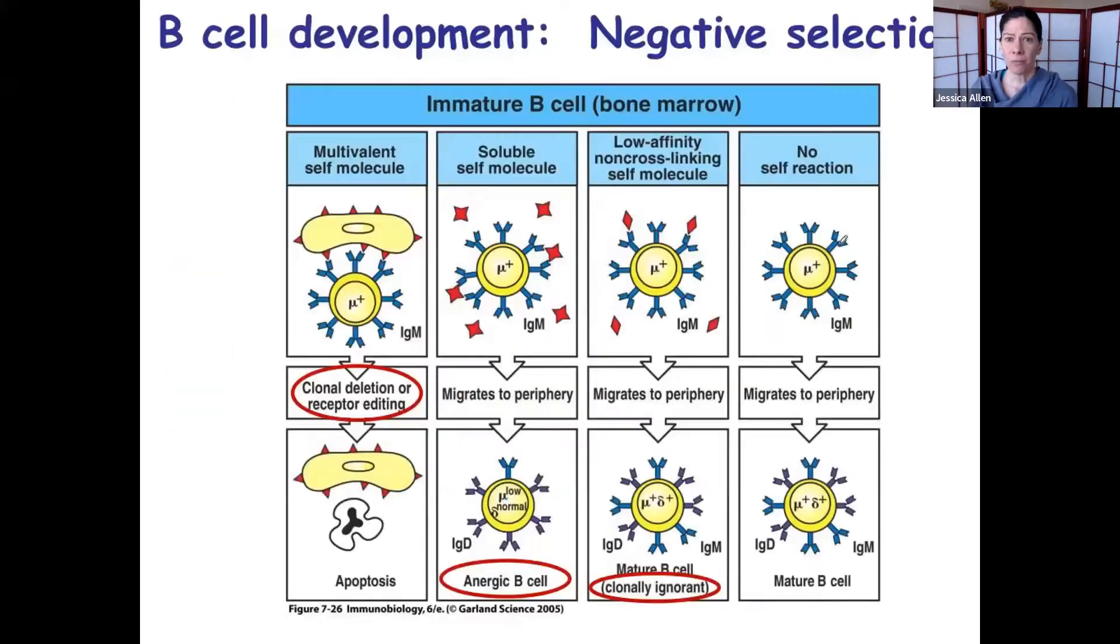We actually want to make sure that that B-cell doesn't really respond very strongly to our own proteins. B-cell negative selection is sort of a vague process. Essentially, the immature B-cell hangs out in the bone marrow for a little while in a safe space and says...